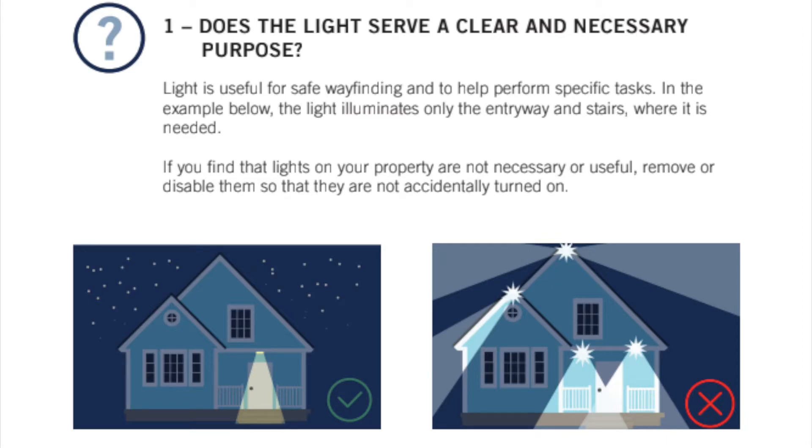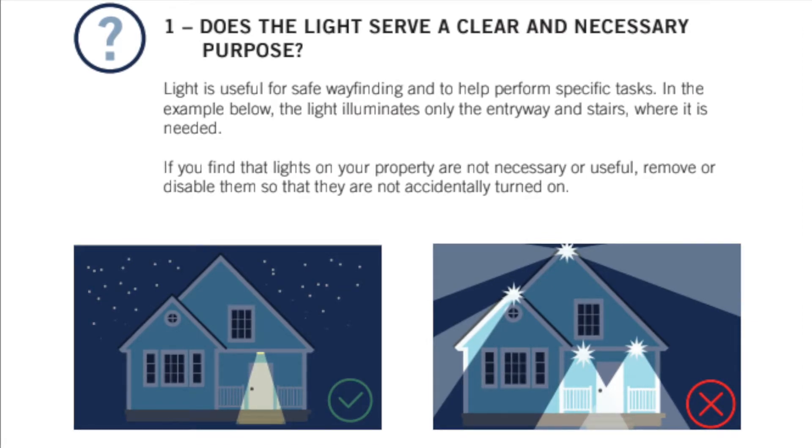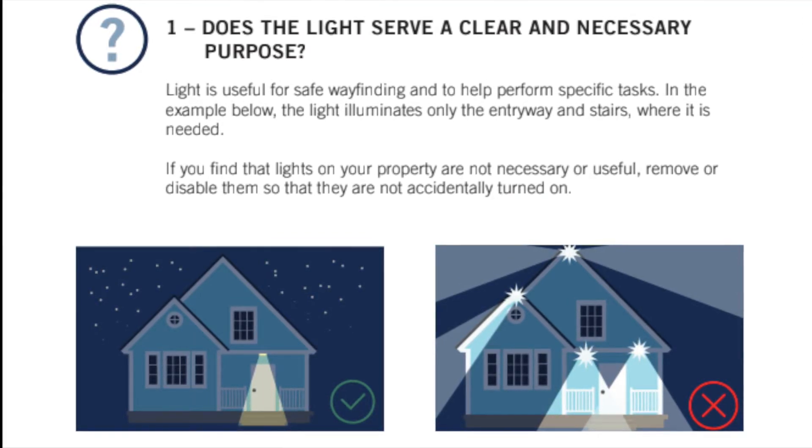Now that we've talked about acceptable and unacceptable outdoor light fixtures, let's talk about how to evaluate a potentially acceptable one. We have five principles. Principle one — Useful: all light should have a clear purpose. Before installing or replacing a light, determine if light is needed. Consider how the use of light will impact the area, including wildlife and the environment. Consider using reflective paints or self-luminous markers for signs, curves, and steps to reduce the need for permanently installed outdoor lighting. A light has a purpose when it helps us see and do certain tasks.